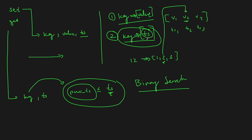So it's a binary search to find the index, and then we return the value from the value dictionary. Two dictionaries, each using the key as the dictionary key, storing either a list of values or a list of timestamps. Then a simple binary search. Enough talking — let's go to the code editor and type this up. It's really straightforward.